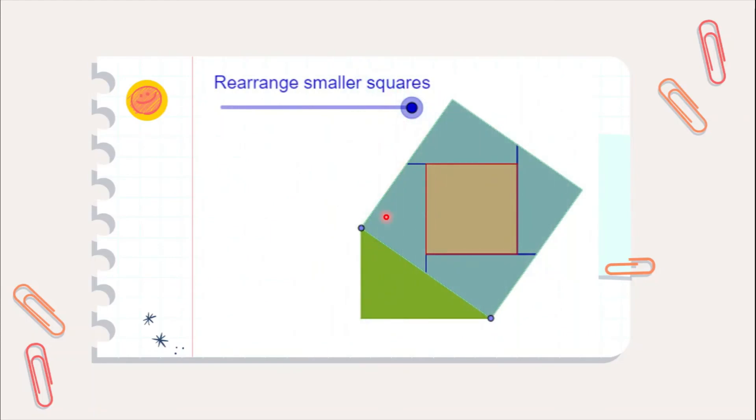So, we have observed that the square and the four quadrilaterals cut from the two squares completely fill this bigger square on the hypotenuse. Thus, our Pythagoras theorem is verified.